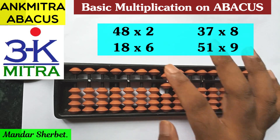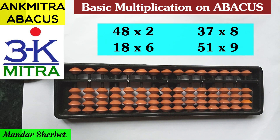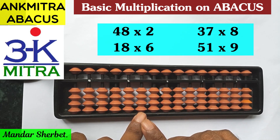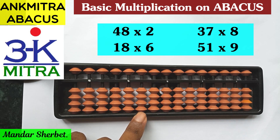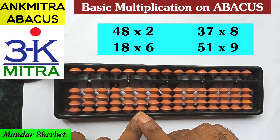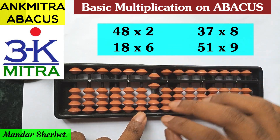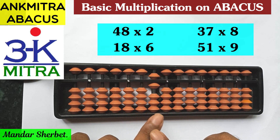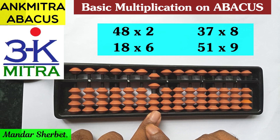Now the second example: 18 multiplied by 6. We start again from the third rod. The first step is 1 multiplied by 6 — that is the tens-place digit. 1 multiplied by 6 should be read as 06, so 0 on the third rod and 6 on the second rod. For the second step we move one place to the right.